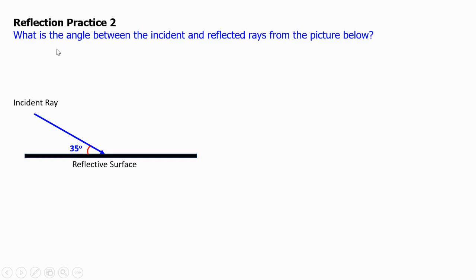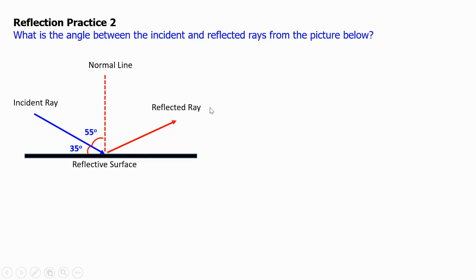Reflection practice 2. What is the angle between the incident and reflected rays from the picture below? First, draw the normal line, which is perpendicular to the reflected surface. This angle must be 55 degrees — with 35 degrees, we have 90 degrees. The reflected ray also makes 55 degrees with the normal. So the angle between the incident and the reflected ray is 110 degrees.